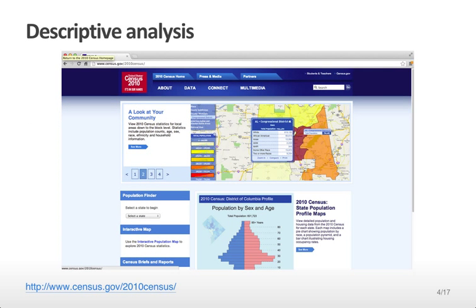So here's an example of a descriptive analysis. This is the website of the 2010 United States Census. The goal here was simply to enumerate all of the United States citizens, then gather some very specific information about those citizens and use that information to apportion representation in the United States Congress. The goal is not to infer anything about a greater population or to perform any kind of prediction. It's simply to describe the population.